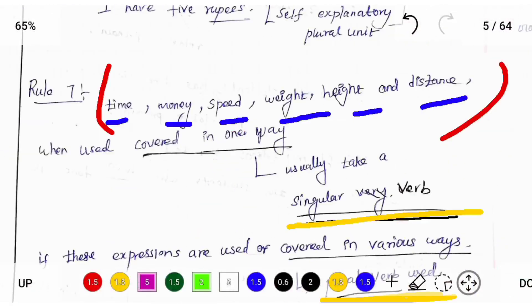Students to note that time, money, speed, weight, height and distance. These measurements covered in two ways or more than two ways, we should use plural verb. Otherwise, we should use singular verb. In the next video, we are going to see next rule. Thanks for watching this video.